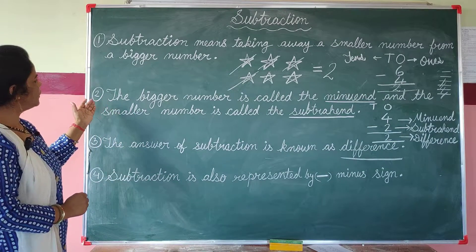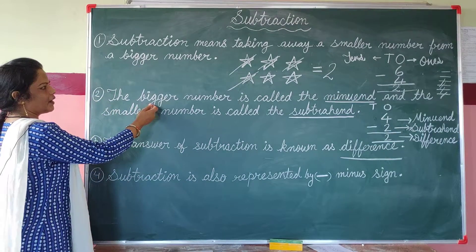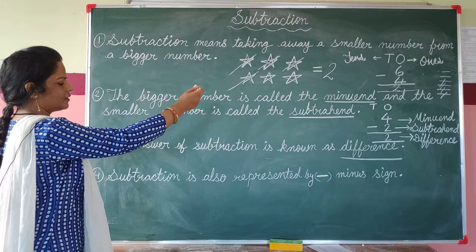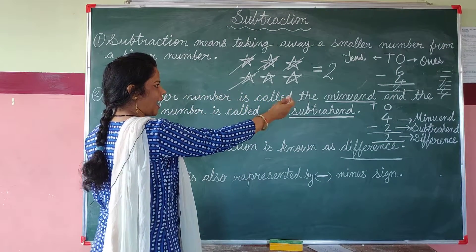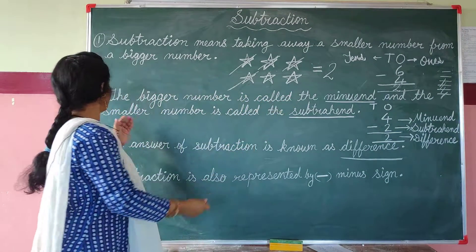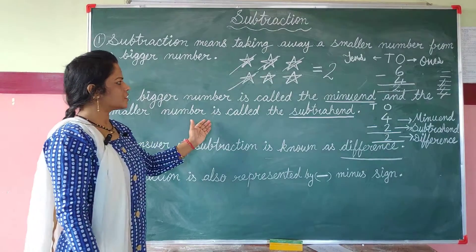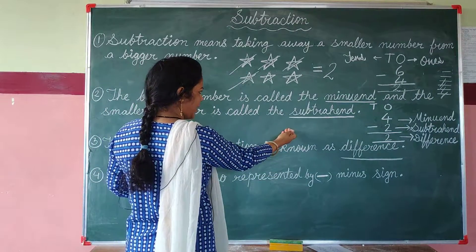Rule number 2: The bigger number is called the minuend and the smaller number is called the subtrahend.